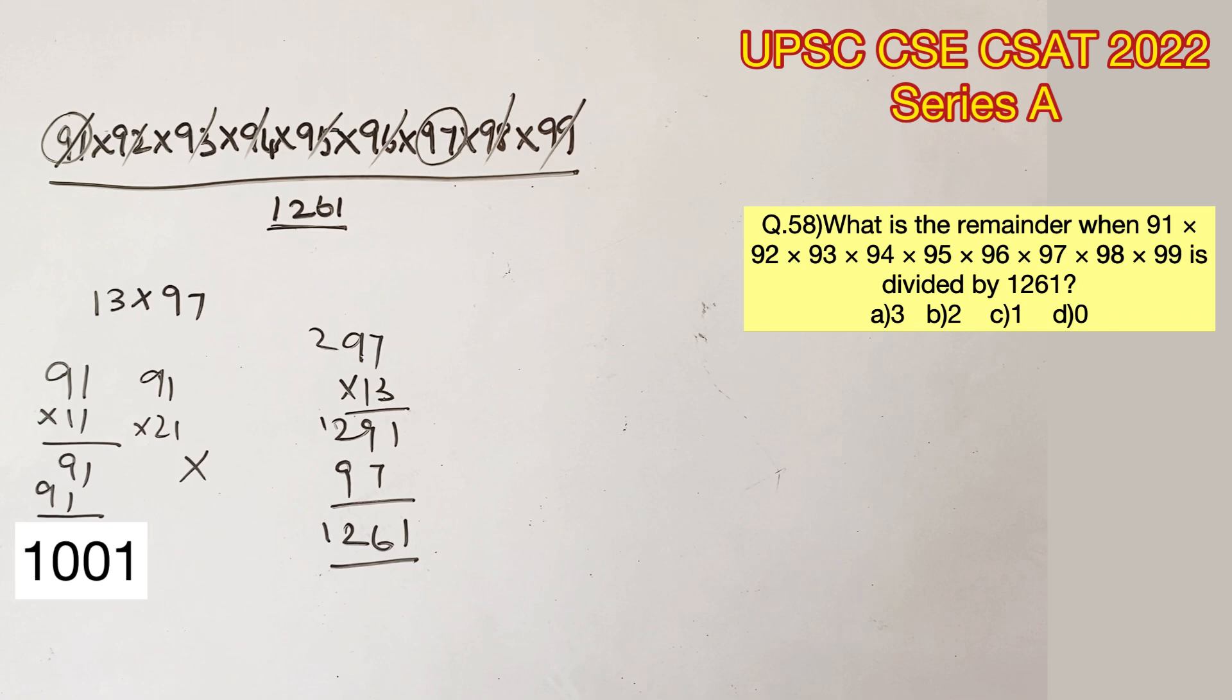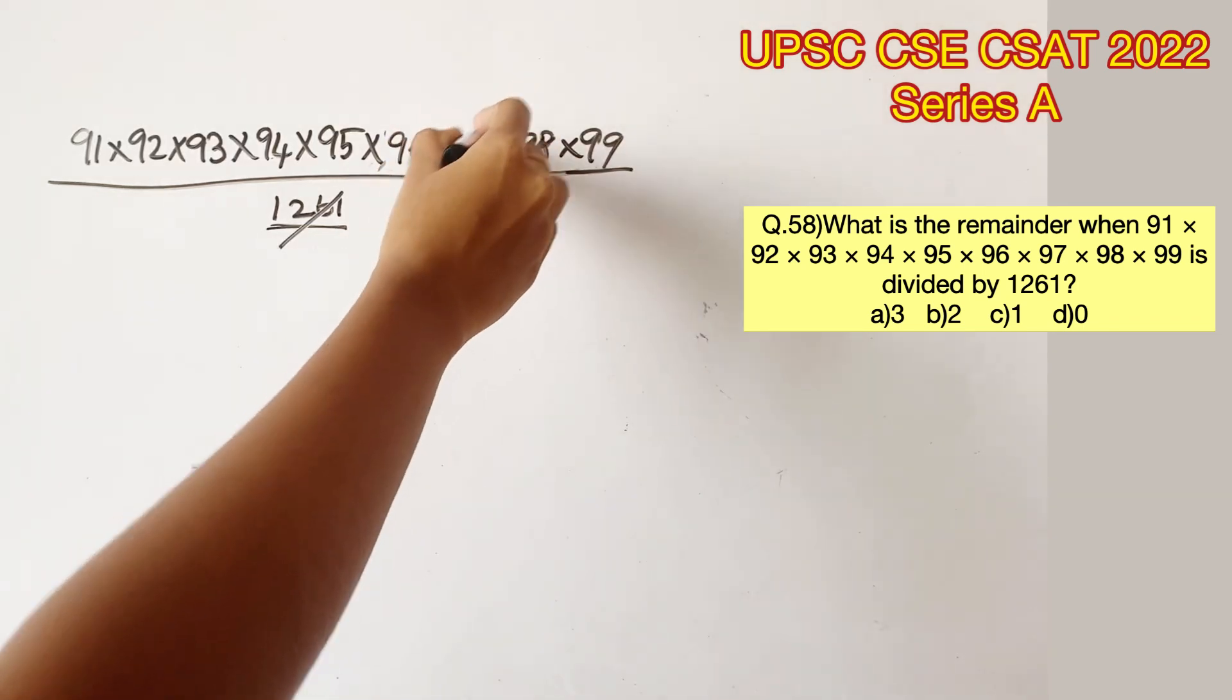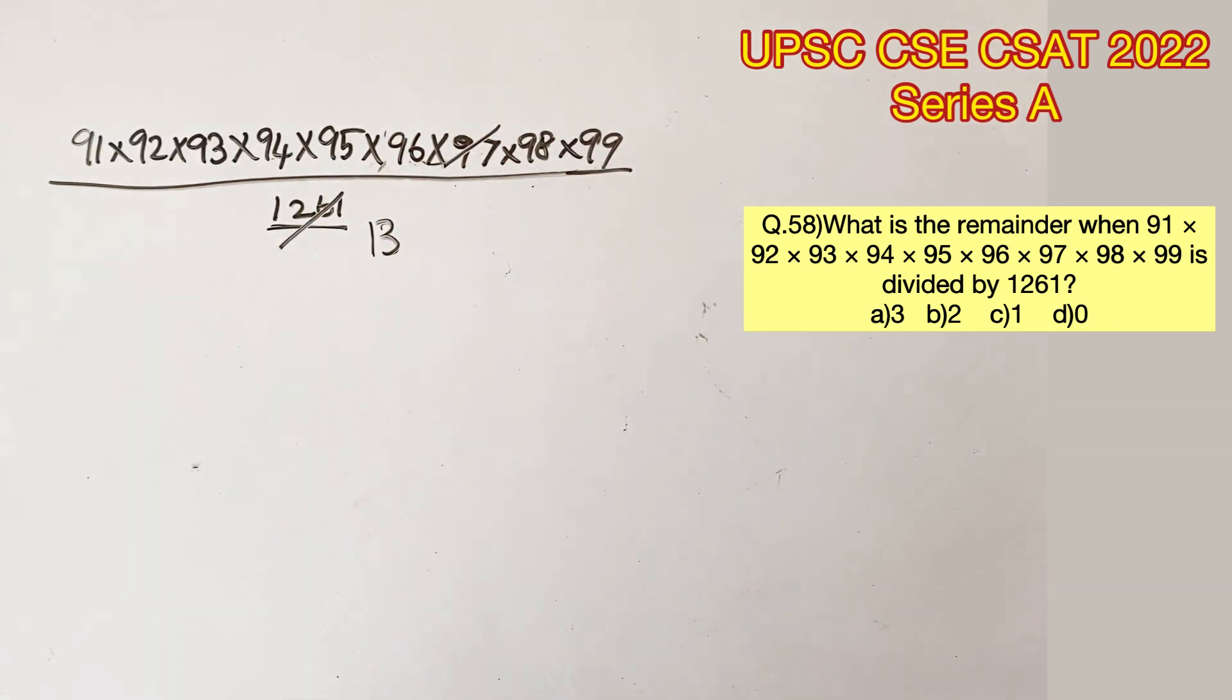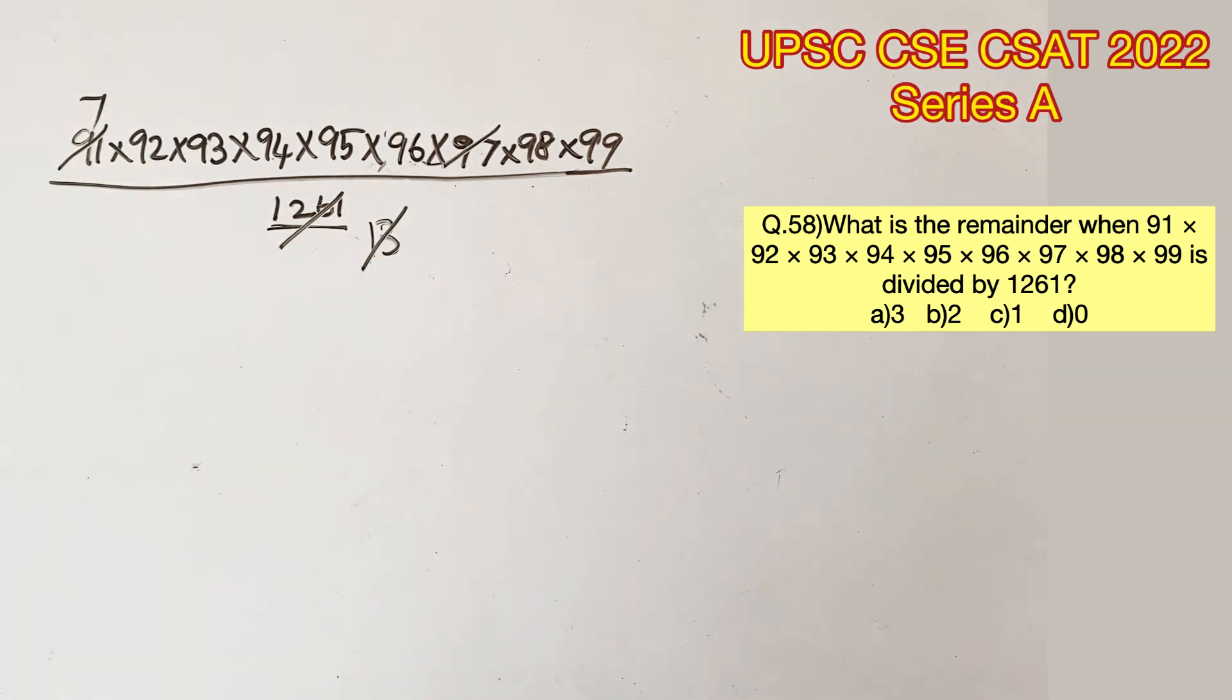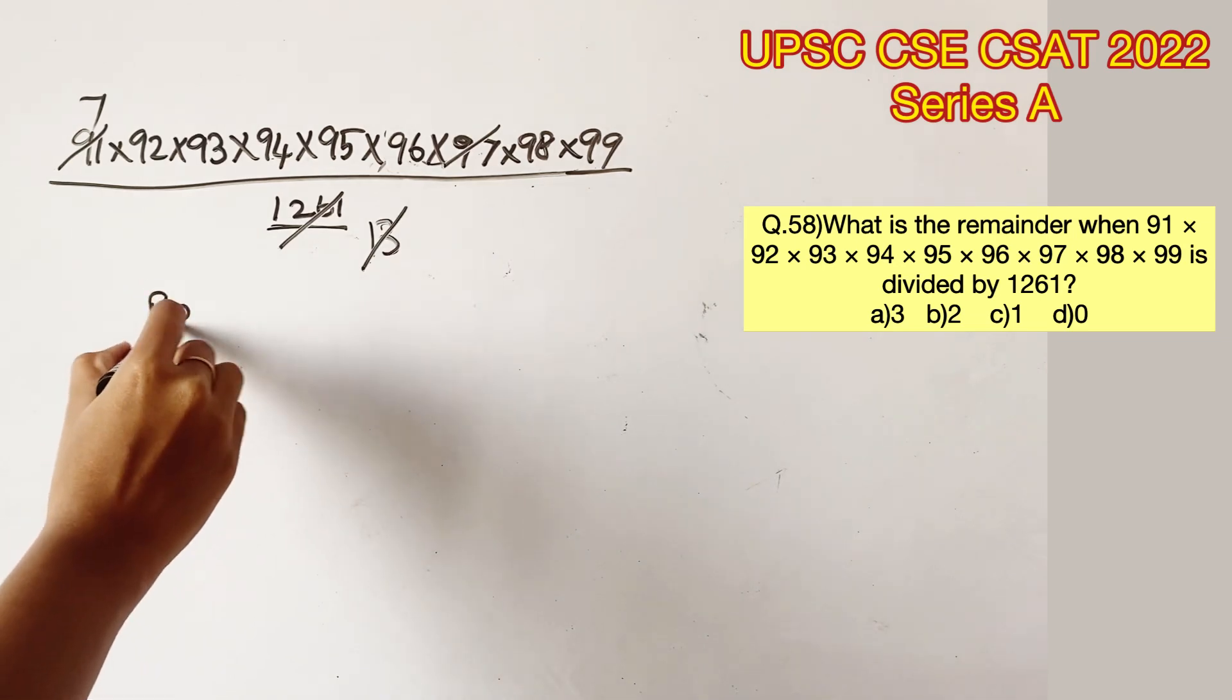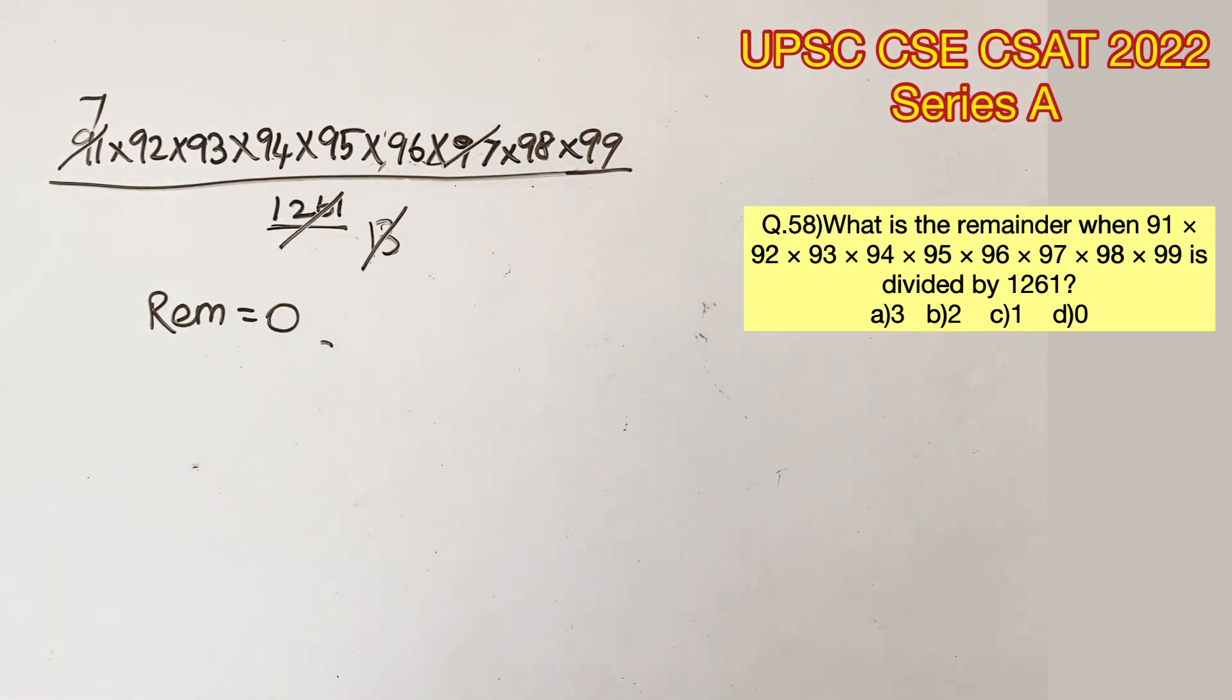That's how you should arrive at the answer. So now we can cancel 97 on the numerator and put 13 here. We know that 13, 7s are 91. This shows that the numerator is completely divisible by the denominator. So there is no remainder. Remainder is equal to 0. So option D is the right answer.